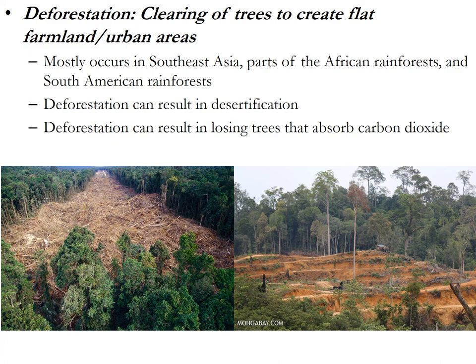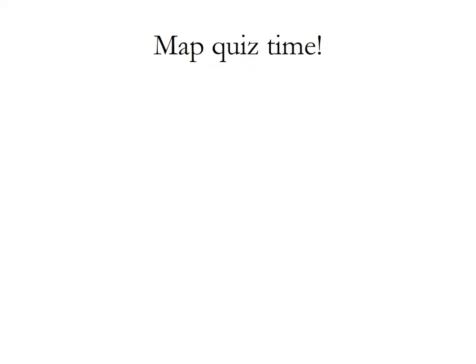Finally, our last one is deforestation — clearing trees to create flat farmland. We saw this in shifting cultivation, but in shifting cultivation it's not permanent because trees eventually come back. Permanent deforestation is like in Brazil, where they clear out and create pastures for ranching. This is also occurring in Southeast Asia and parts of Africa. The scary part is that once you clear out trees and the grass has been eaten, it can lead to desertification. And by getting rid of trees, you get rid of the thing that absorbs carbon dioxide.